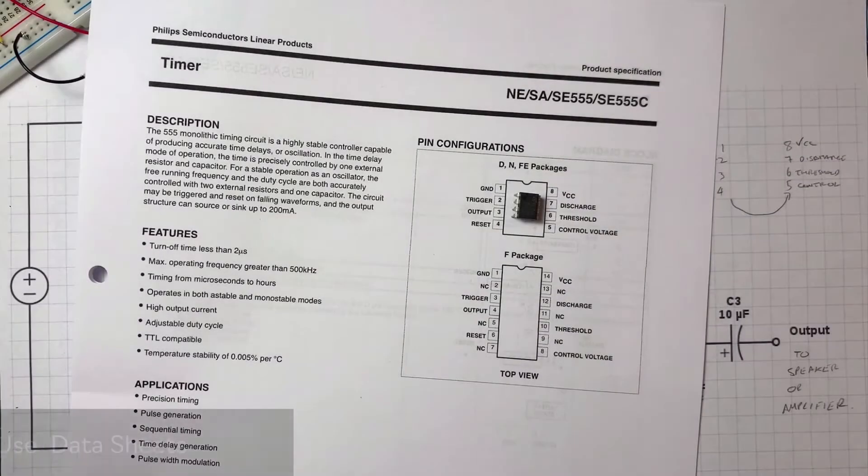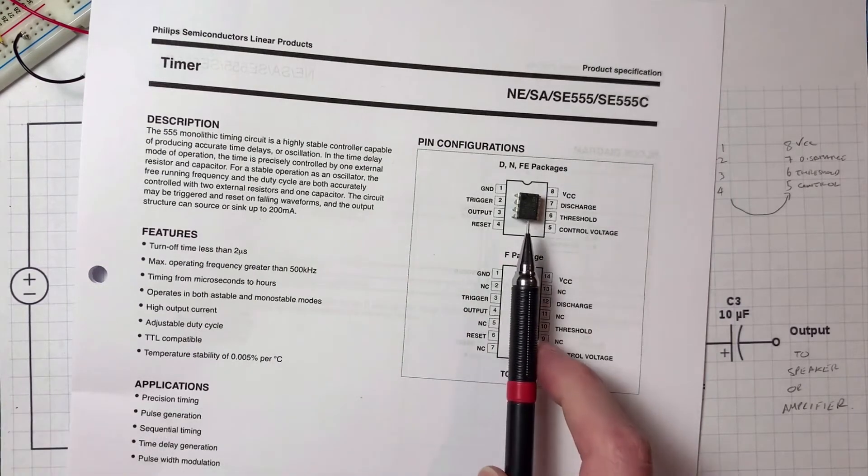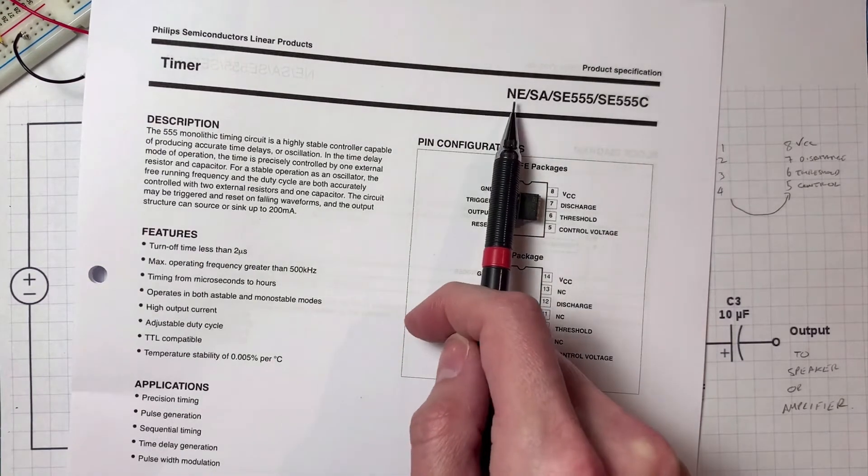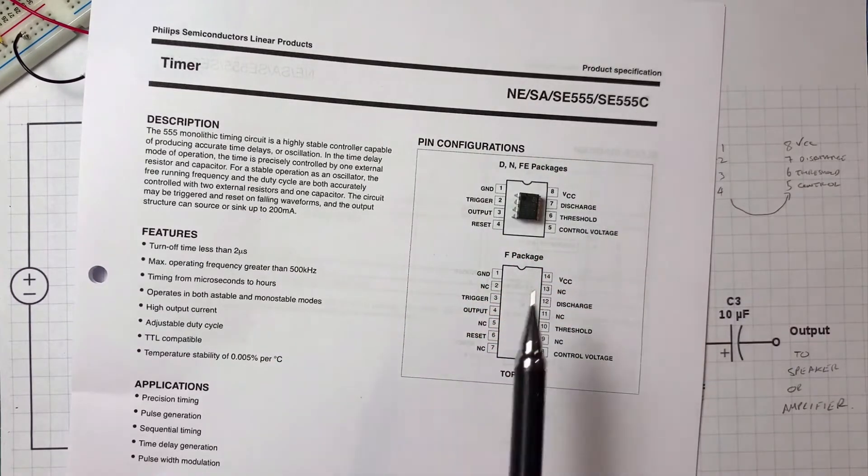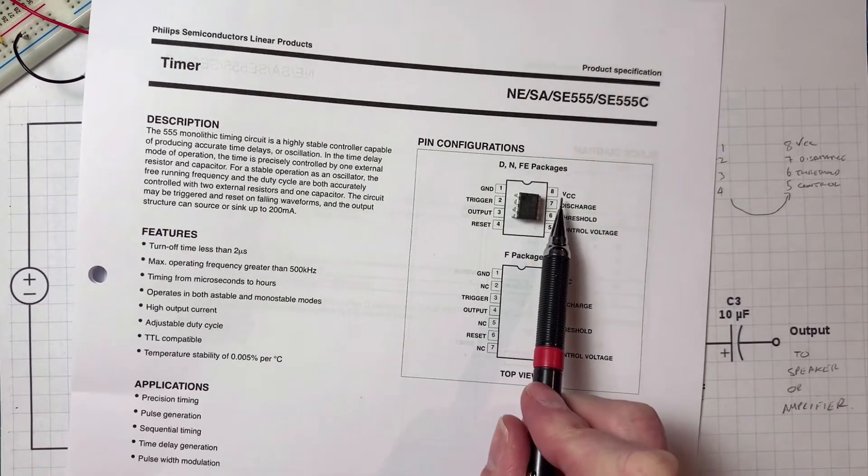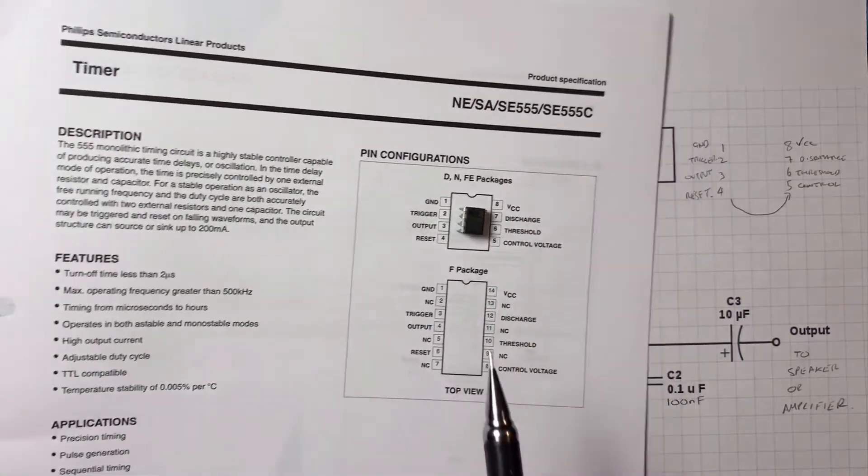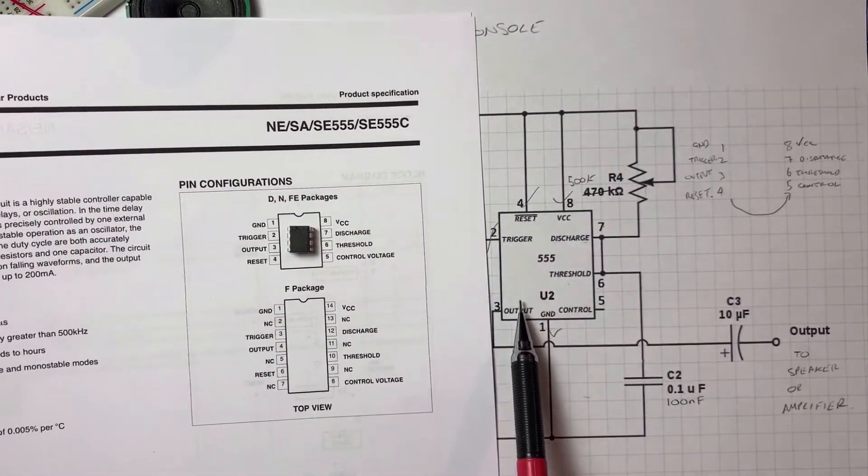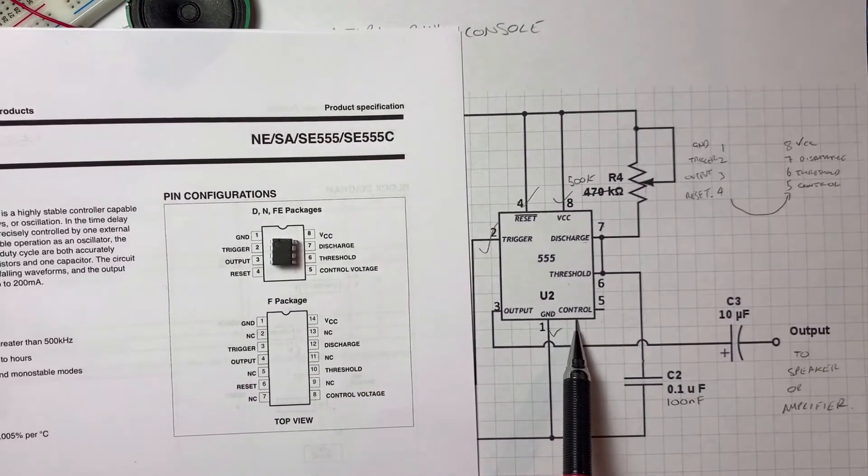My third tip is to use the datasheet of the component you're working with. This is an NE555 timer, so I found the correct datasheet, NE555 timer, and here is a diagram of its pinout. You'll see on the schematic that the pinouts aren't in order; they're just written on the schematic in the appropriate place.